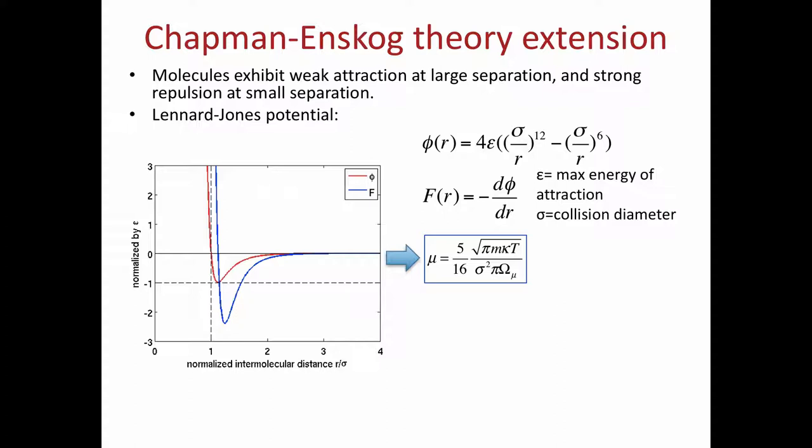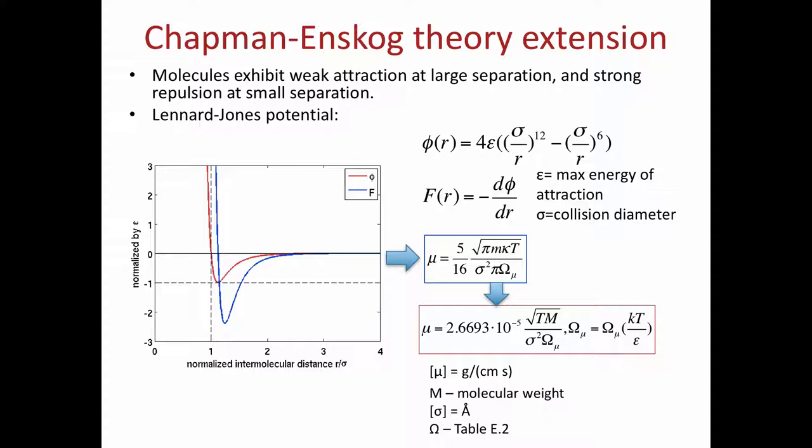When I actually incorporate that, there is a slightly different formula that is more accurate. I still have this square root of T dependence, so that hasn't changed. But what I will put in there is this collision diameter and this omega integral, and those I actually have to go and look up. This is something I look up in table E2 where I can find this collision integral. This is tabulated and you use it. This particular formula has very specific units: gram per centimeter second. CGS units.